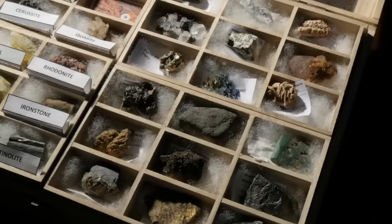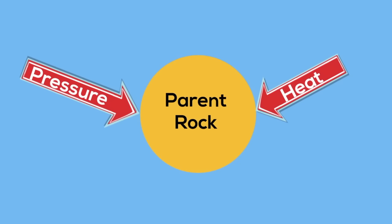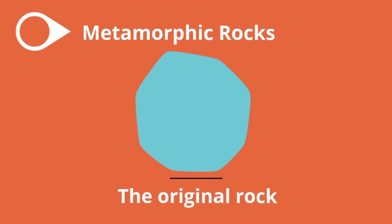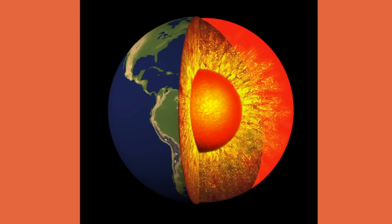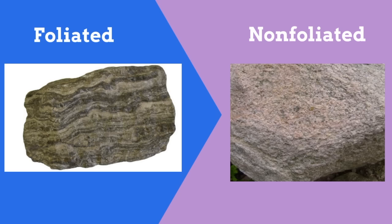Metamorphic rocks come from existing rocks that are subjected to extreme heat and pressure. This heat and pressure changes the original structure into a new type of rock. Sedimentary, igneous, and even metamorphic rocks can all become metamorphic rocks when exposed to heat and pressure. The original rock is the protolith but is commonly referred to as the parent rock. Metamorphic rocks can form deep in the earth's crust or at areas of plate tectonic movement. Two major types are foliated rocks, which have crystals in stripes, and non-foliated, which do not have crystals in stripes.